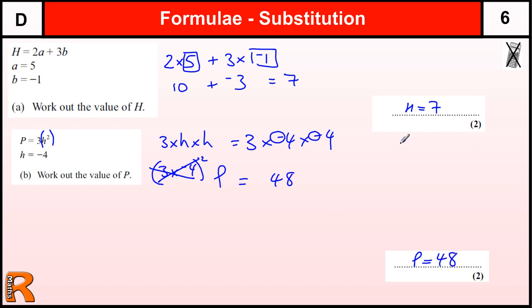There are some marks in this for method or working. If you're showing that you know 2a means 2 times 5, and 3b means 3 times minus 1, or if they see a 10 and a minus 3, then you would get one of the two marks. If you then made a mistake and did 10 plus minus 3 and thought that was minus 13 or something, then you would get one method mark. But if you just wrote the wrong answer, you get nothing. It's very important that you show all your working on GCSE questions that are worth two or more marks.